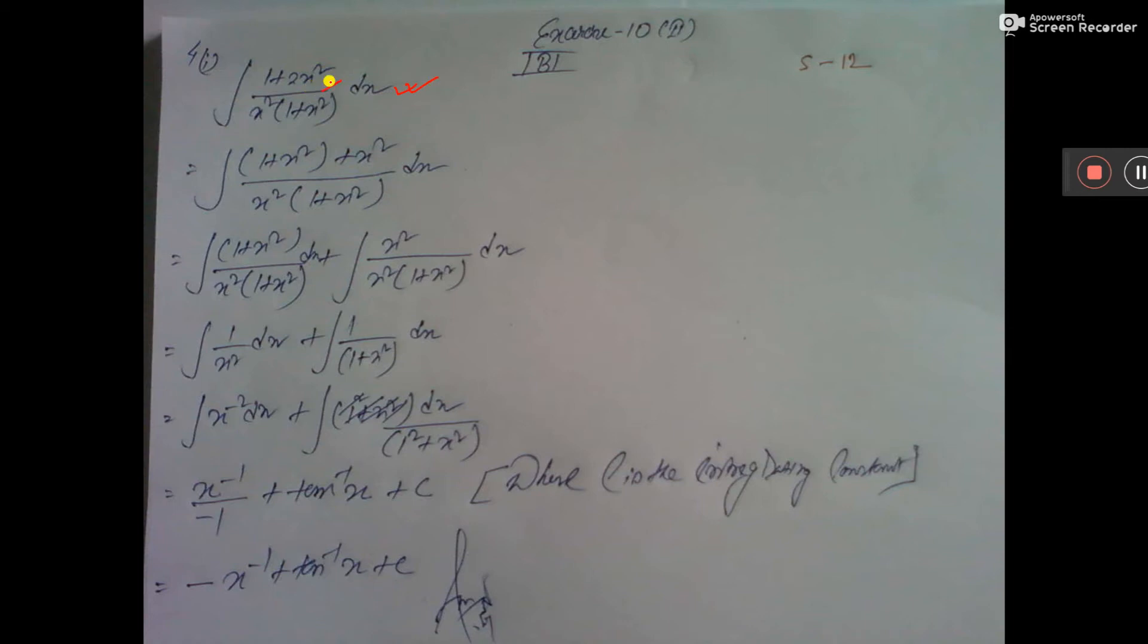Now see 2x squared is there, you break down x squared plus x squared. Then you can do 1 plus x squared by this plus x squared by this. You are separating this.